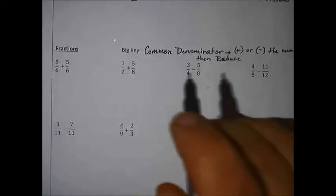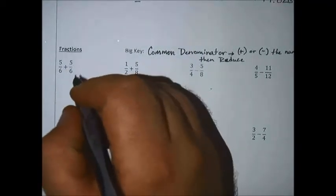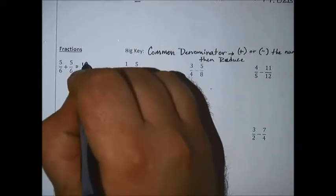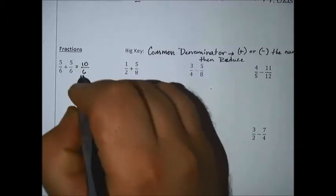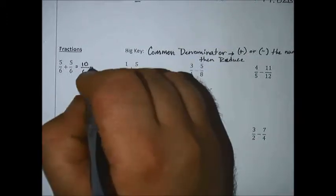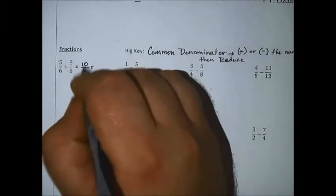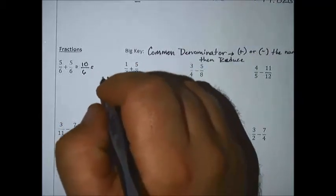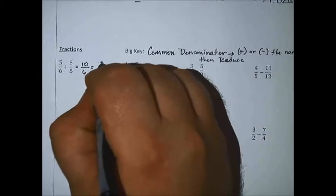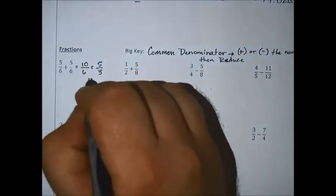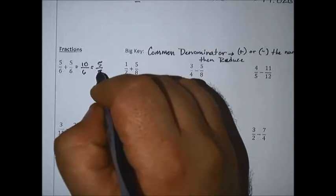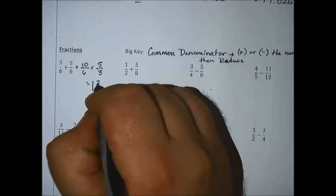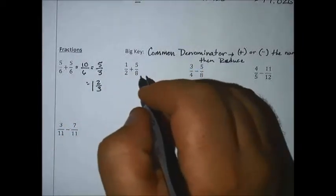For this one, we have 5/6 plus 5/6 — the beauty is we already have common denominators. Add straight across: 5 plus 5 is 10, keep the denominator the same. I can reduce that — it's improper — divide both by 2 and get 5/3. How many times does 3 go into 5? It goes in once with 2 left over, so 1 and 2/3 is my final answer.